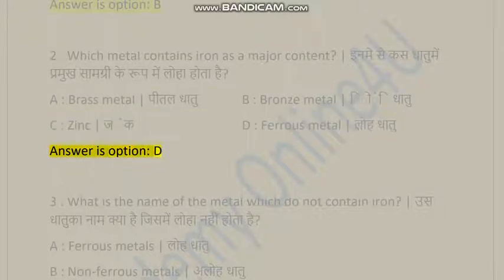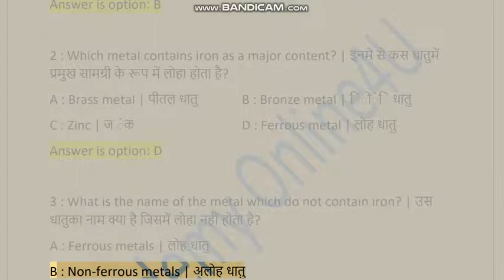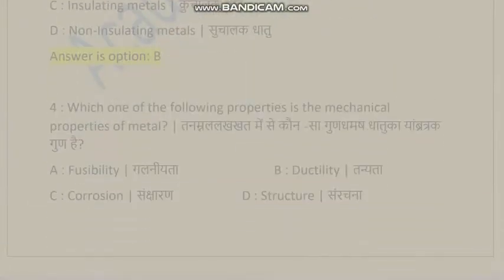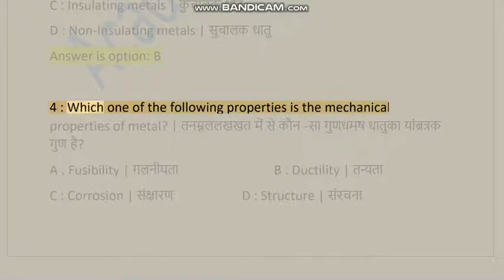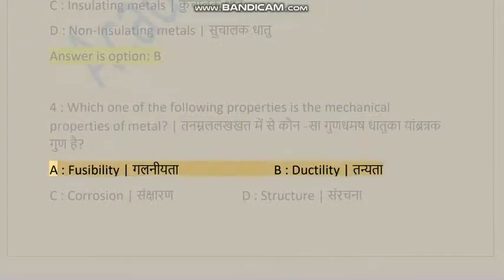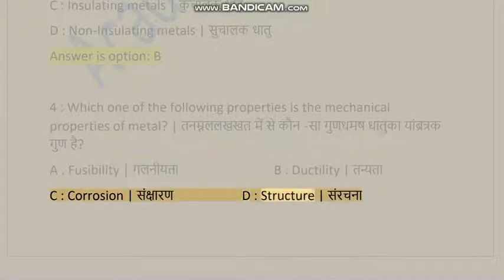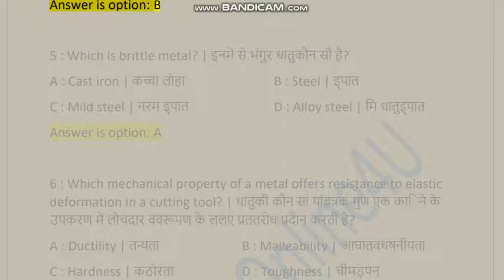Question 3: What is the name of the metal which does not contain iron? A) Ferrous metals, B) Non-ferrous metals, C) Insulating metals, D) Non-insulating metals. Answer is option B. Question 4: Which one of the following is a mechanical property of metal? A) Fusibility, B) Ductility, C) Corrosion, D) Structure. Answer is option B.